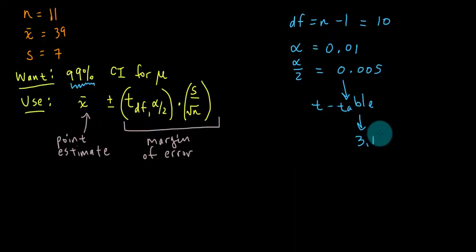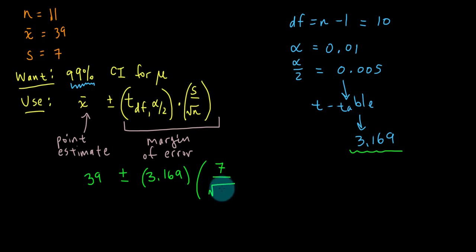Now I have all the pieces to put together. Our point estimate was 39. We're going to add and subtract that T value we just found multiplied by s over square root of n.